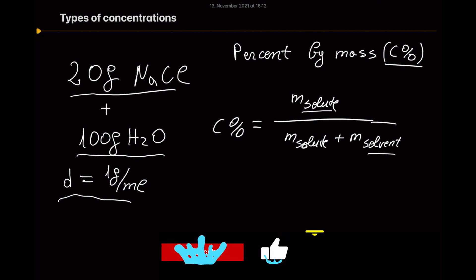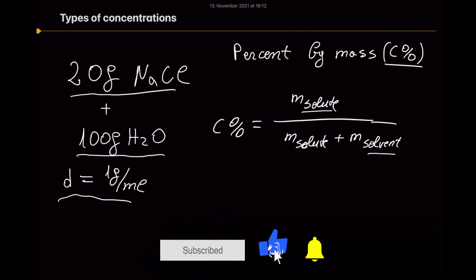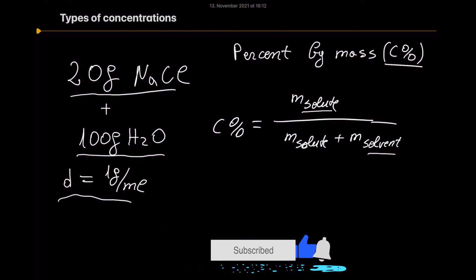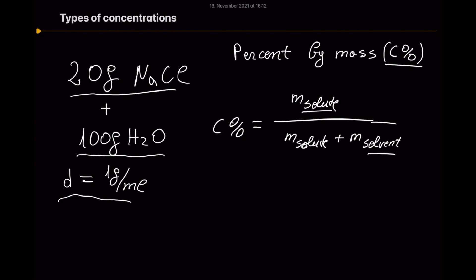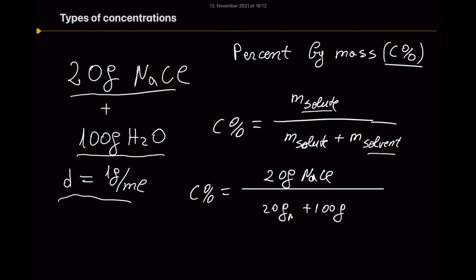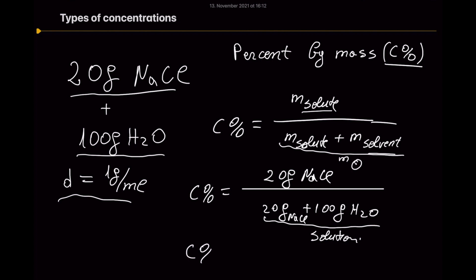Now that you understand what the solute and the solvent are, and that mixing them gives you a solution, let's move to our calculation. We have 20 grams of the solute divided by 20 grams of the solute plus 100 grams of the solvent, which makes the solution. So the concentration, percent by mass, will be 16.6% sodium chloride.